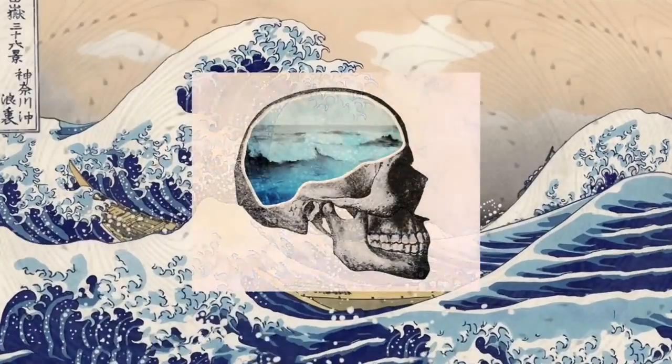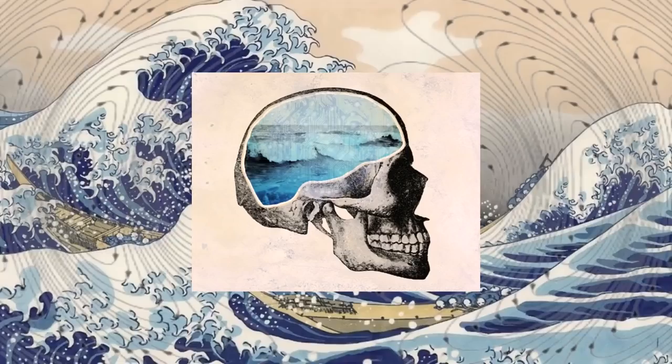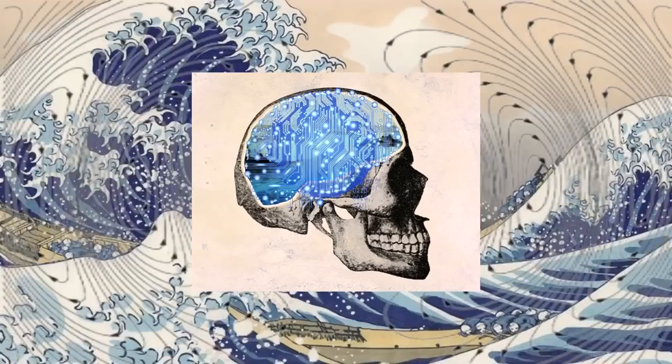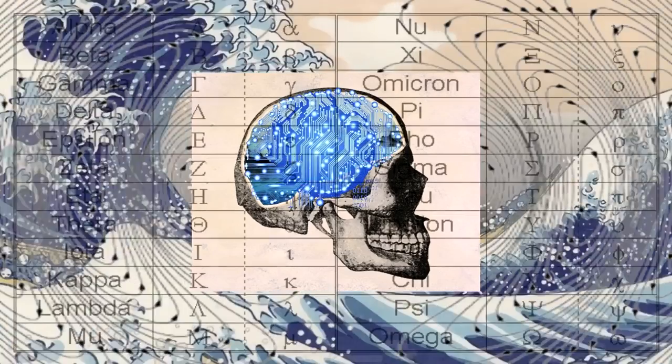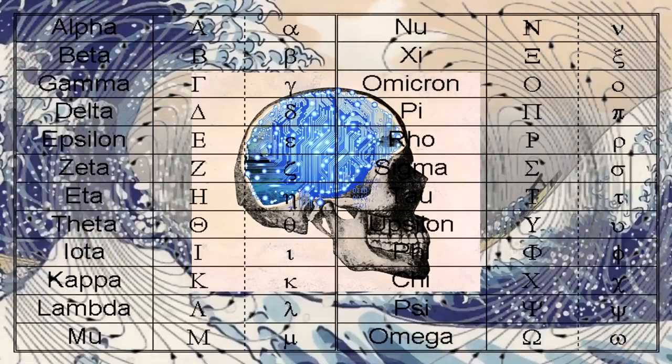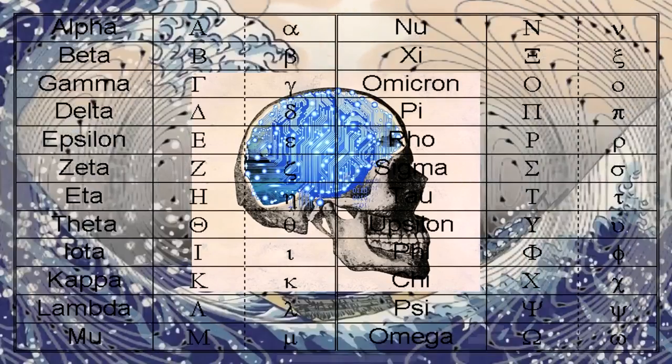Before we create the waves, we must understand the different states of brain waves, which are labeled after the Greek alphabet, because you know.